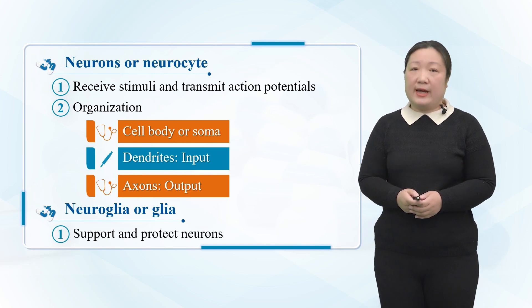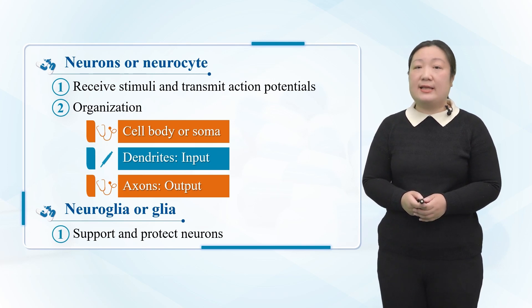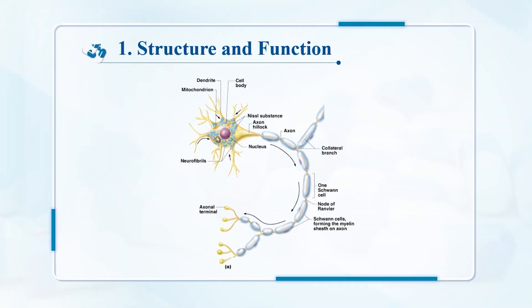The characteristics of glial cells: there are protrusions, but there are no dendrites and axons. No synapses are formed. No action potentials can be generated.